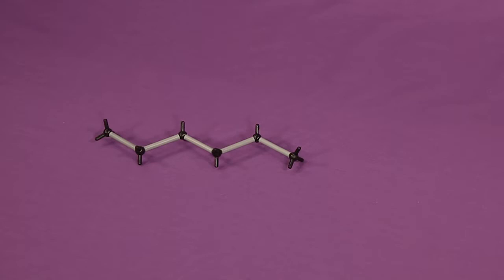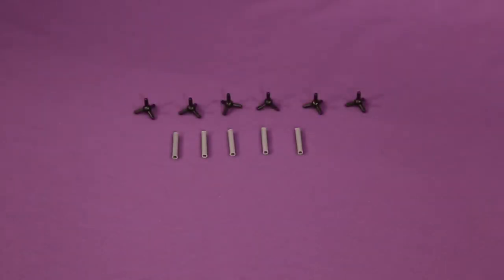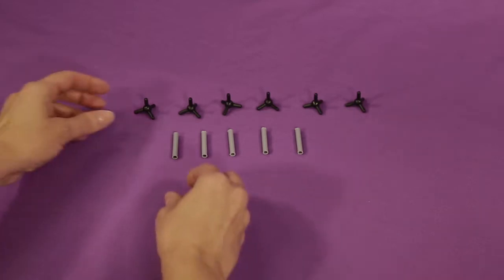To start, let's make a simple alkane, hexane. Pull out of the model set six carbon atoms and five single bonds.